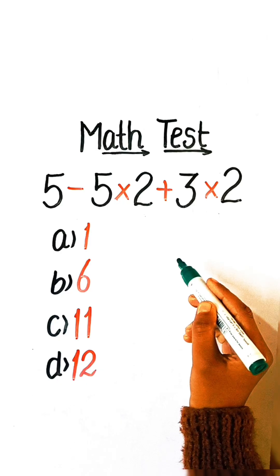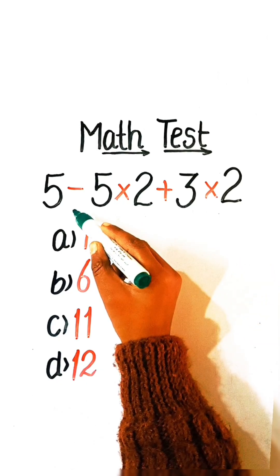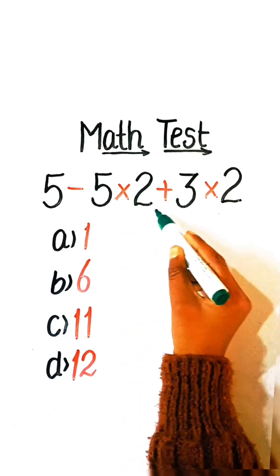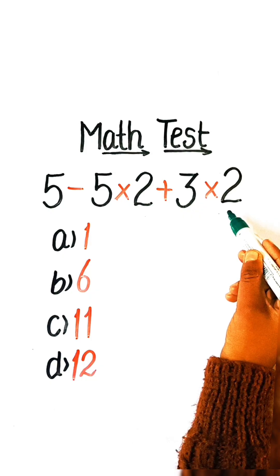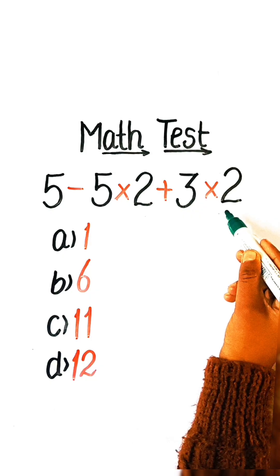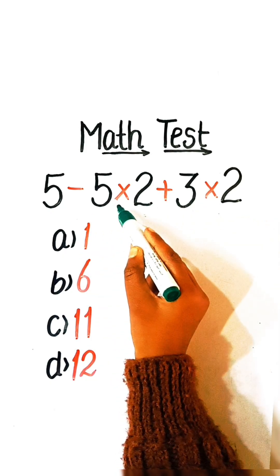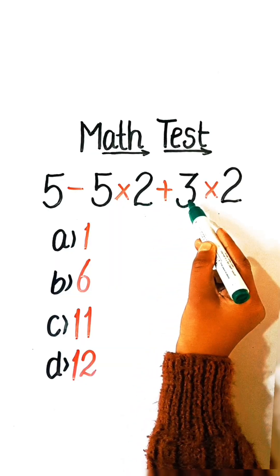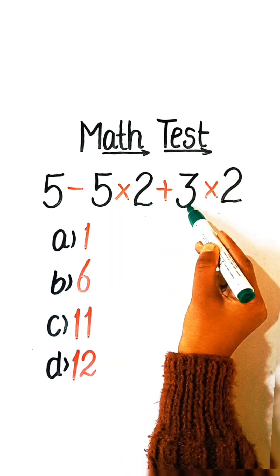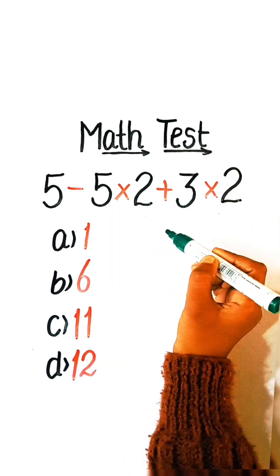Hello everyone. Welcome back to my YouTube channel. In this video, we will solve this math equation: 5 minus 5 multiplied by 5, plus 3 multiplied by 2, equals to what?